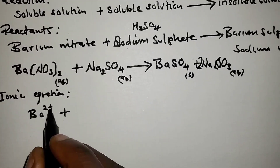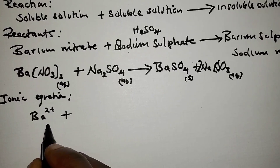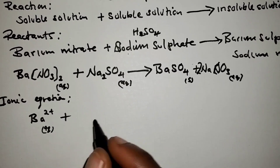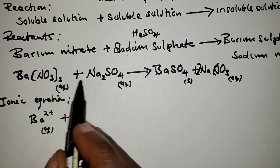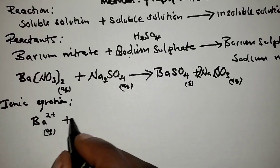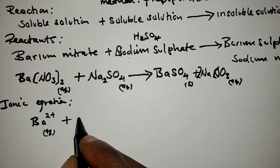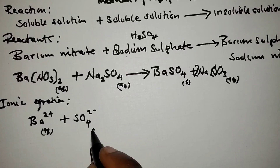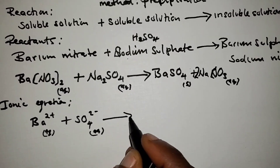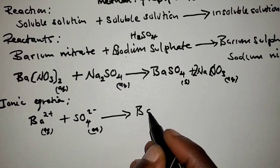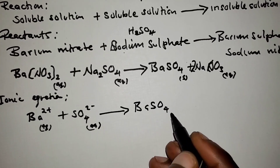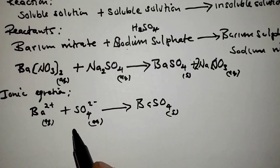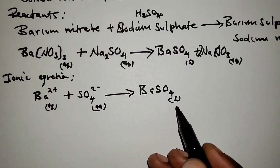The ionic equation: Ba²⁺ (aq) + SO₄²⁻ (aq) → BaSO₄ (s). This is the ionic equation showing that barium ions and sulfate ions combine to form the solid barium sulfate precipitate.